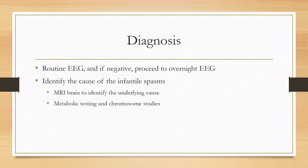The diagnosis starts with EEG. You can start with a shorter routine EEG, and if you don't see the hypsarrhythmia, you can proceed to an overnight EEG to capture it. Once you've made the diagnosis, you'll want to find the cause. This will start with an MRI brain to see if there are any lesions causing the disease, and if none are found, then we'll proceed to metabolic testing and chromosome studies.